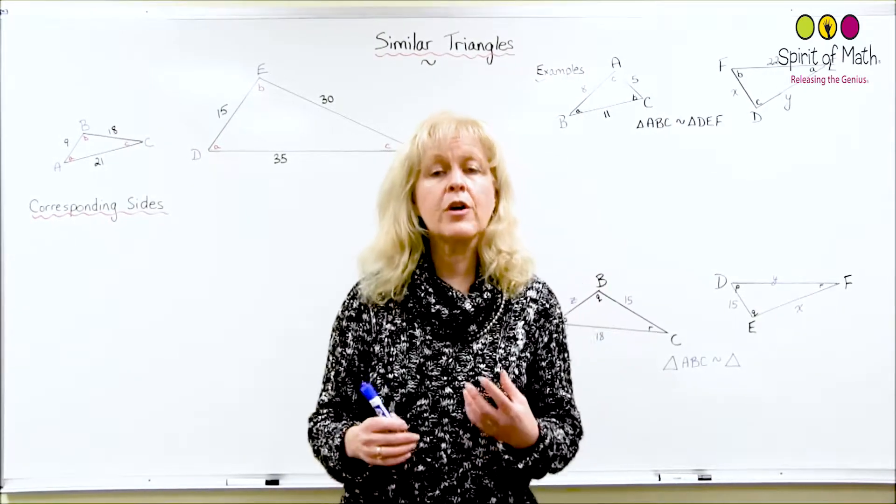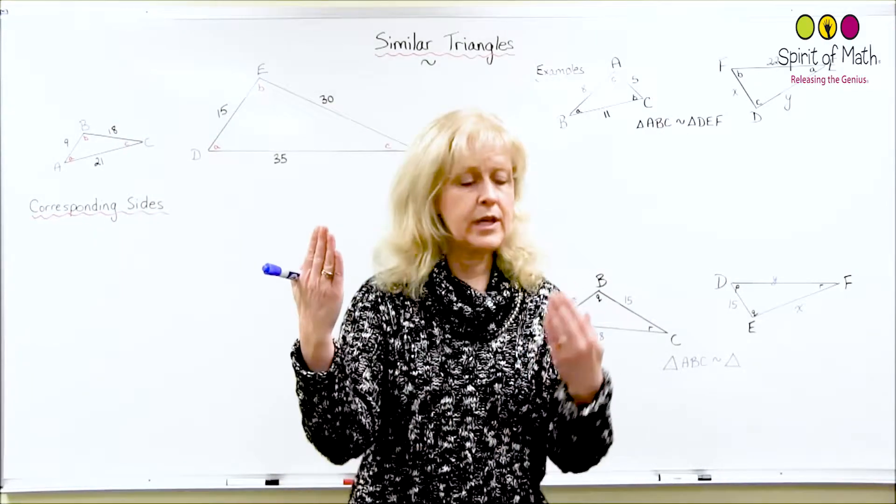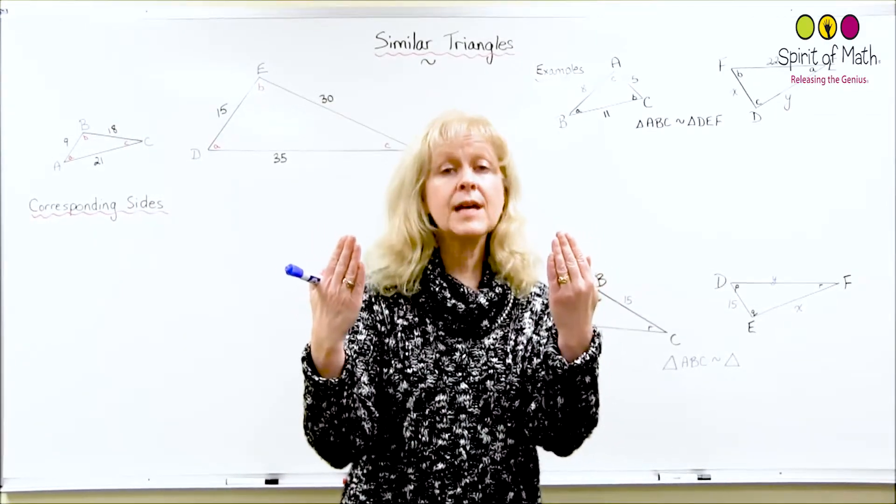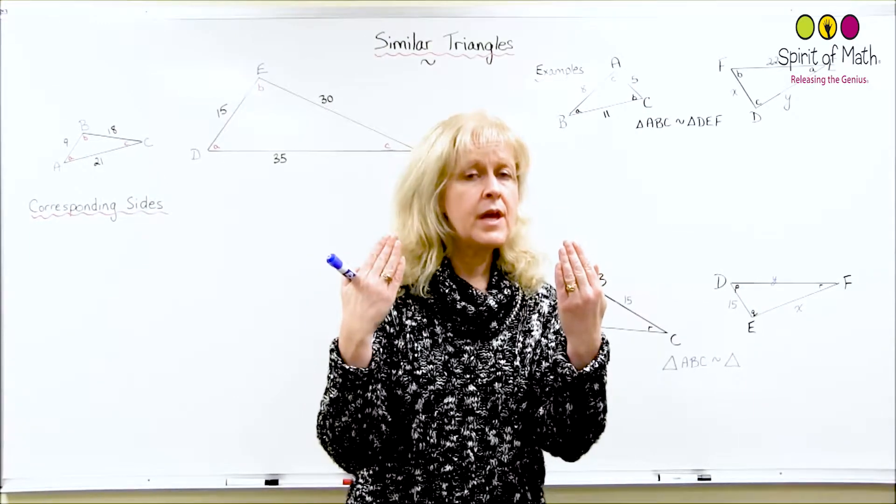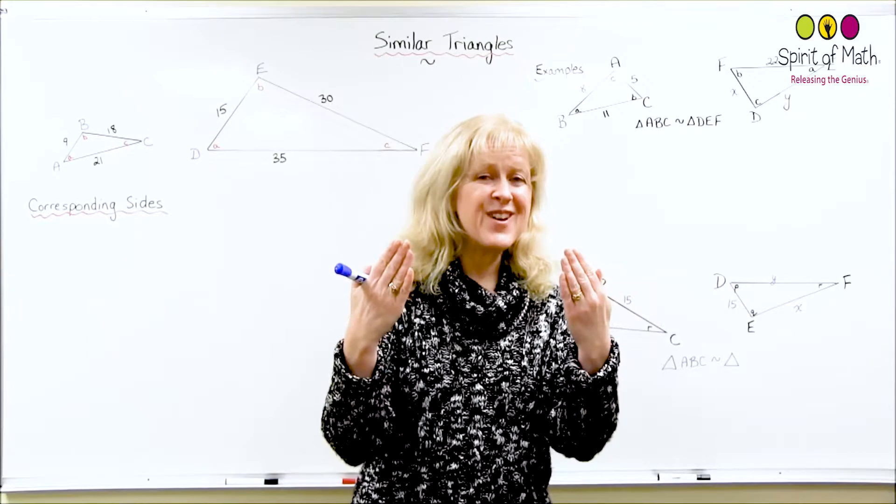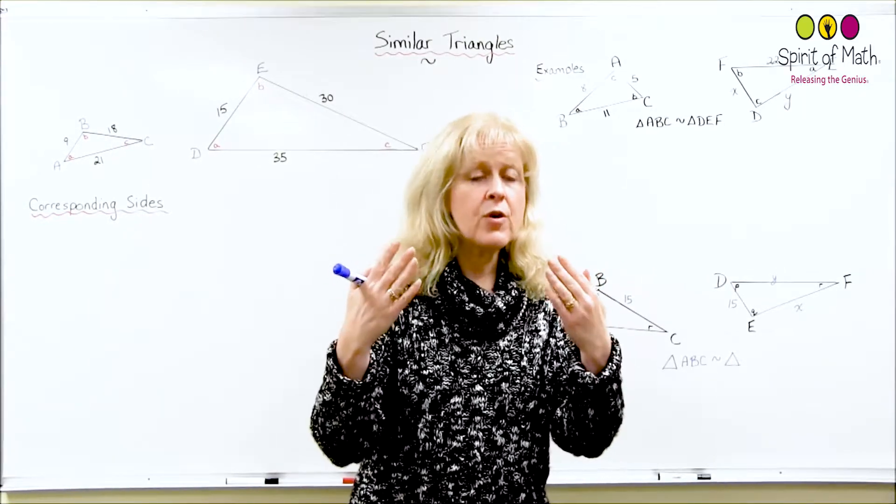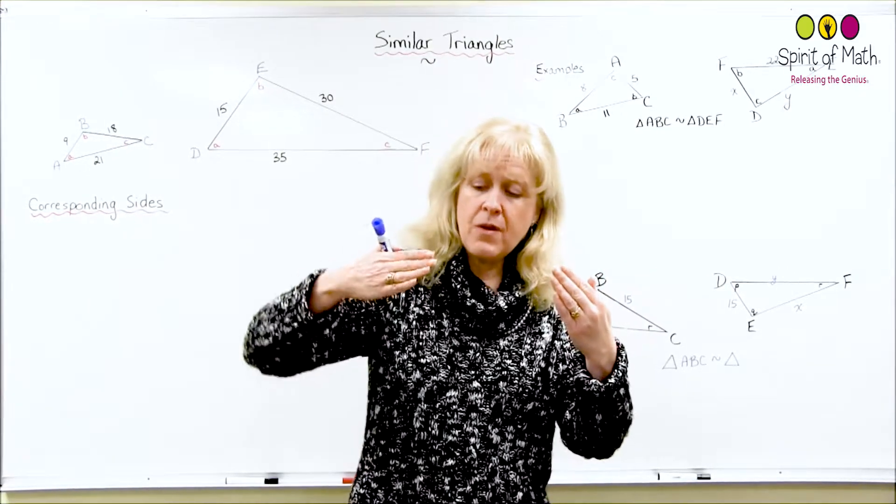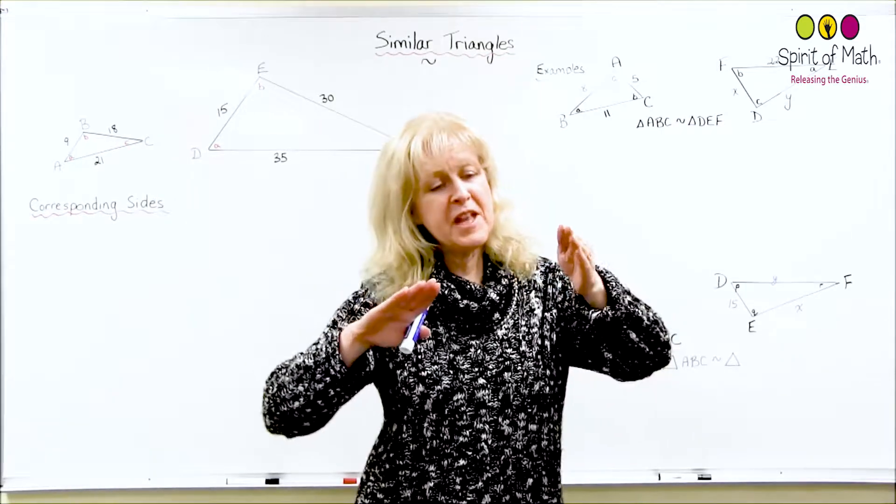Congruent triangles are exactly the same triangle, so you'll have a triangle here, a triangle there, and they'll be exactly the same. They have exactly the same size of sides, same length of sides, and also the same size of angles for every corresponding angle. So they may be rotated, something like this, but they still are the same.